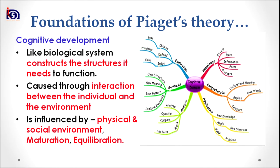What are the foundations of Piagetian theory of cognitive development? Piaget assumed that cognitive development, like biological systems, constructs the structures it needs to function, and those structures are called schema or schemata. Cognitive development is also caused through interaction between the individual and the environment — the individual needs to interact with his physical and social environment. Cognitive development is also influenced by physical and social environment, maturation, and equilibration, which is a basic process proposed by Jean Piaget.